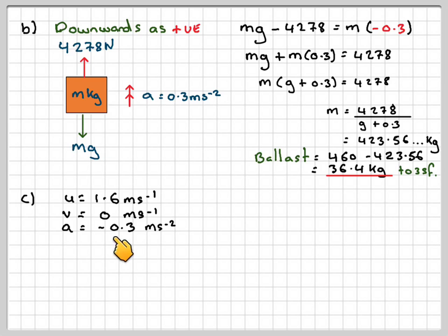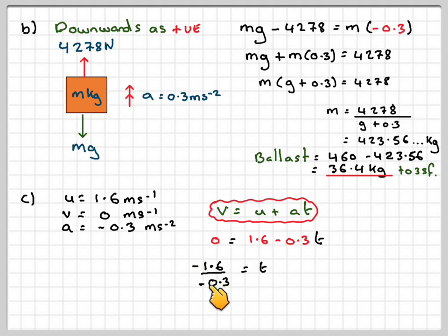Again, if you were going to do it the other way around, that would have to be positive and that would have to be negative. You're going to take it upwards as positive. So you've got v is equal to u plus at. So you're going to have 0 is equal to 1.6 minus 0.3t, which means that t will be minus 1.6 divided by 0.3. t would have to come out to be positive because we haven't yet learned how to go back in time. So t is equal to 5 and 1 third seconds.